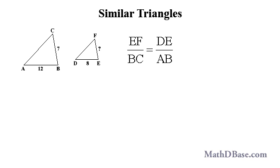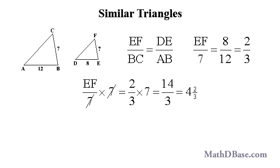Since triangle ABC is proportional to triangle DEF, the length of side EF divided by the length of side BC is equal to the length of side DE divided by the length of side AB. We can substitute the values for the length of the sides, and then solve for the length of side EF by multiplying both sides of the equation by 7 to get 4 and 2 thirds.